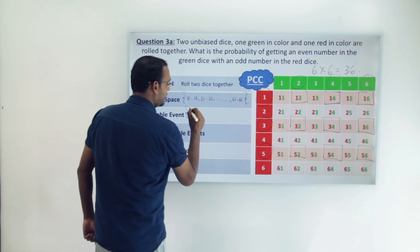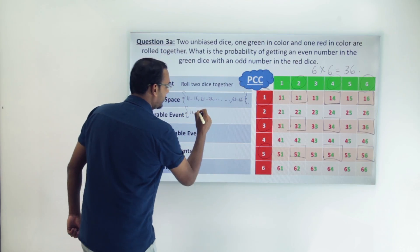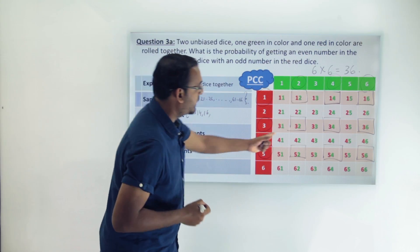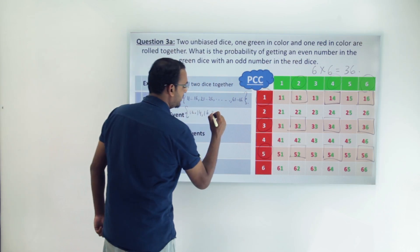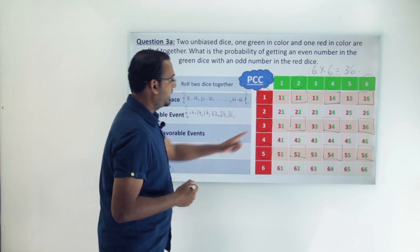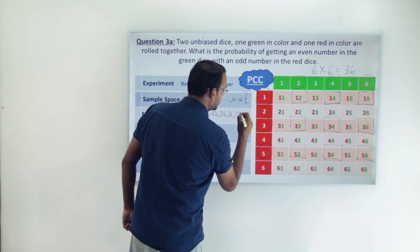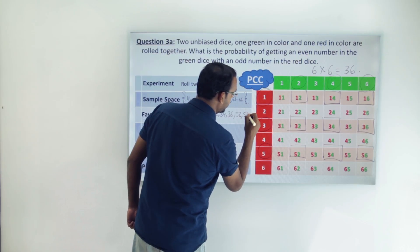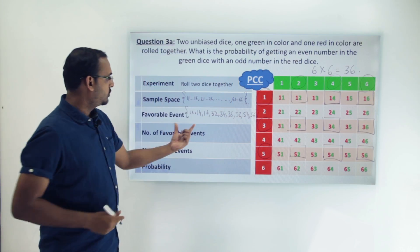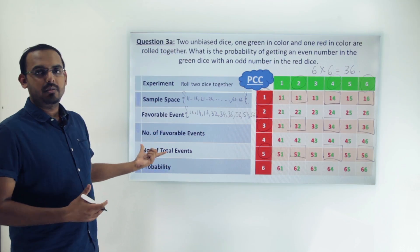So the favorable event set consists of: (1,2), (1,4), (1,6) from the row where red die = 1; then (3,2), (3,4), (3,6) from the row where red die = 3; and (5,2), (5,4), (5,6) from the row where red die = 5.